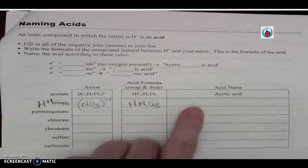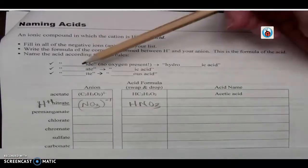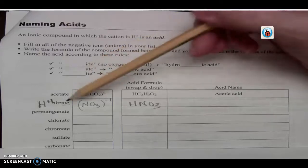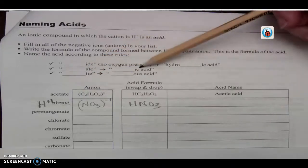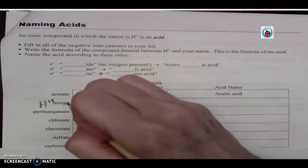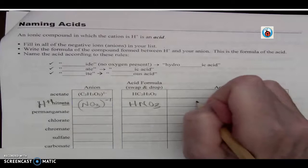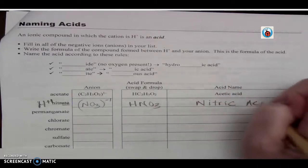Now I'm ready to name this, so I'm going to use this little cheat sheet up here. If my anion ends in -ate, we drop off the ending and add -ic. So I'm going to drop off the -ate and add -ic, so I get nitric acid.